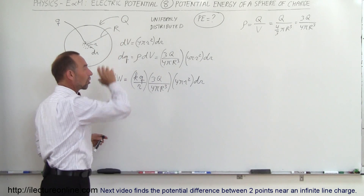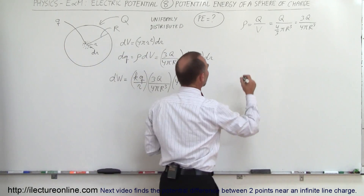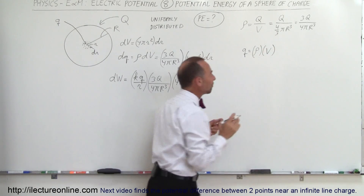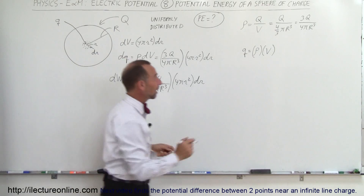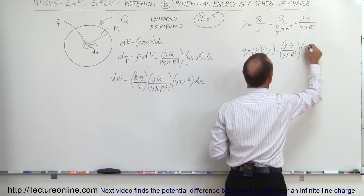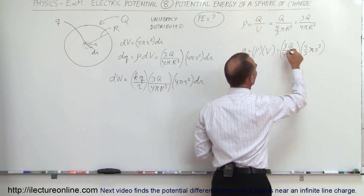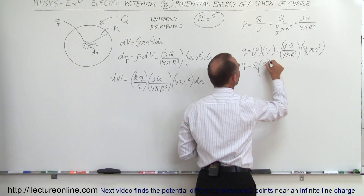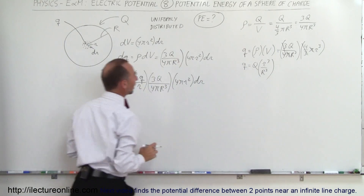The small q is the charge in the very small volume at the center, so q equals density times volume. Using the same charge density (3Q / 4πR³) times the volume (4/3)πr³, the pi's and the 3/4 and 4/3 factors cancel, giving us q = Q · (r³ / R³). So small q equals big Q times the ratio of the small radius cubed to the sphere radius cubed.